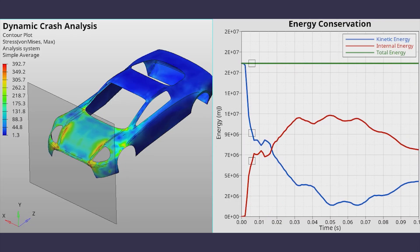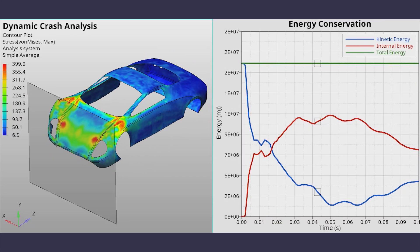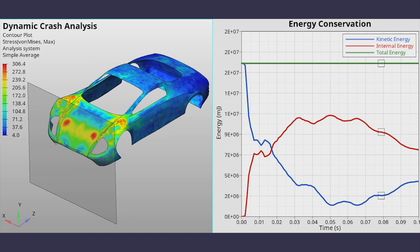LS Dyna is a widely used solver for performing highly non-linear dynamic analysis types like crash, impact, drop test and so on. In this video, we will use HyperMesh to set up a dynamic crash analysis for the LS Dyna solver. We will simulate the crash of a car chassis travelling at a speed of 60 km per hour on a planar rigid wall.